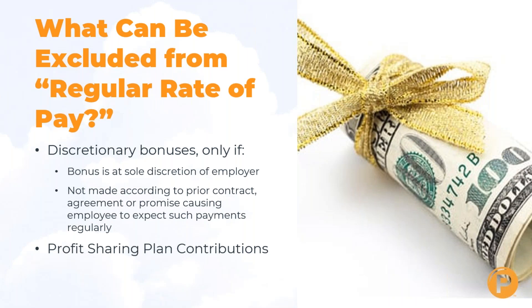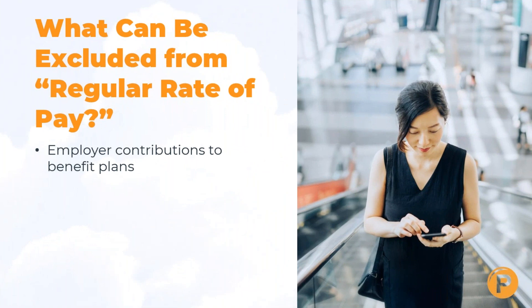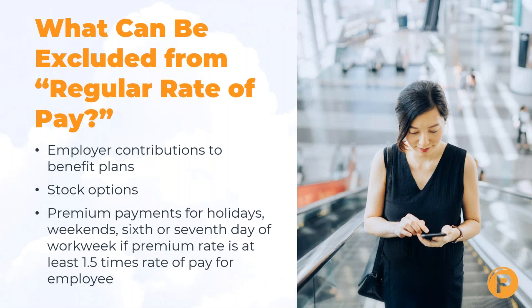Discretionary bonuses are those that are unexpected by the employee. Profit sharing plan contributions can also be excluded. Employer contributions to benefit plans — including retirement plans and health insurance payments — and stock options can be excluded. Premium payments for holidays or weekends, or for the sixth or seventh day of a work week, can also be excluded, but only if the premium rate is at least one and a half times the regular rate of pay.